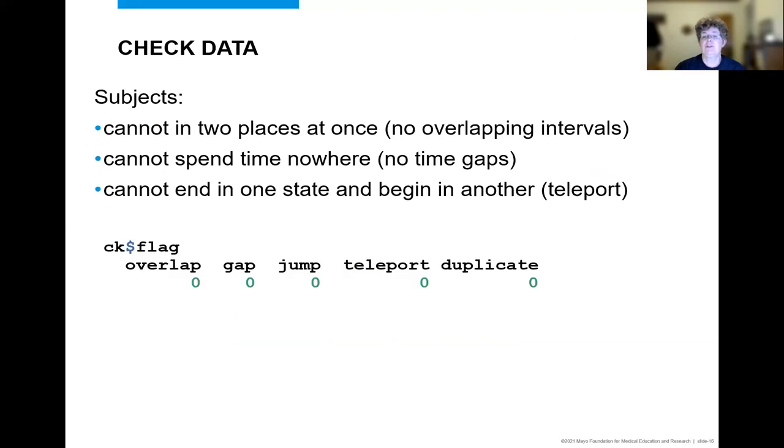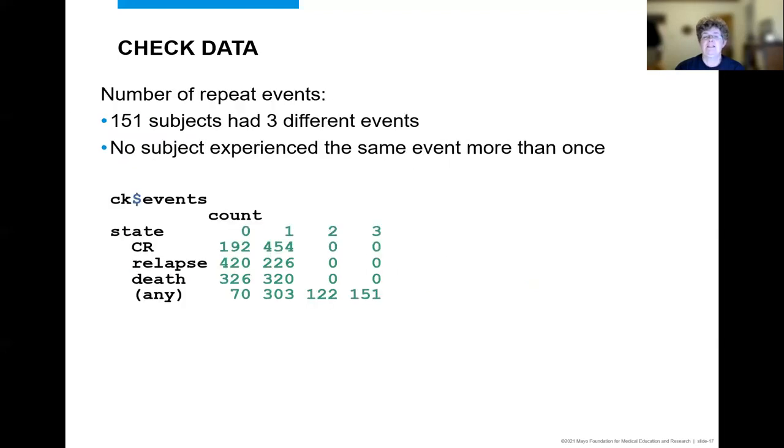Another check is to make sure that all the subjects are following general rules such as are listed here. The serve check object includes the IDs for those subjects that have issues. The analysis functions, mainly CoxPH and ServFID, also will use ServCheck function behind the scenes and will stop if there are errors. So it helps prevent frustration by running this first. Finally, it is sometimes helpful to know just how many subjects experience a given state multiple times. The summary below lets us know that 151 subjects had a complete response, relapse and a death, but no subjects had repeat visits to any given state.